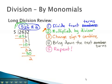When we do that, we see our process is going to be to divide the front terms, multiply this by the divisor, change the sign and combine, bring down the next terms, and repeat the process.